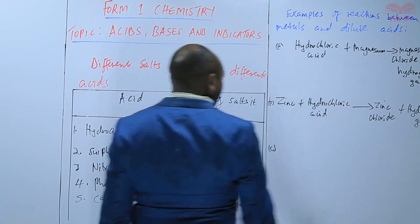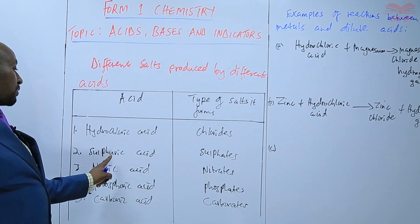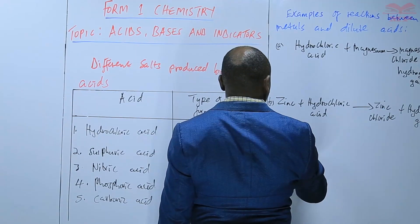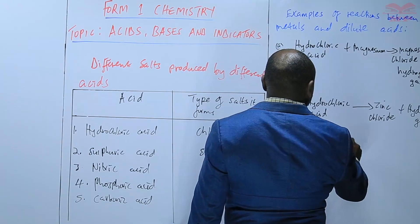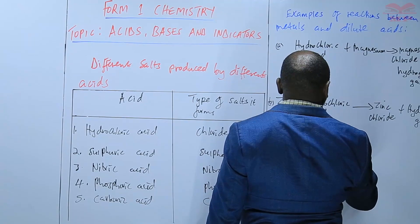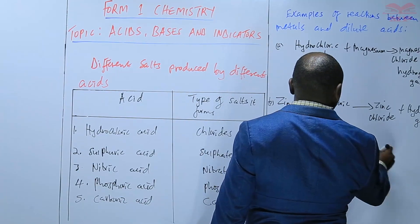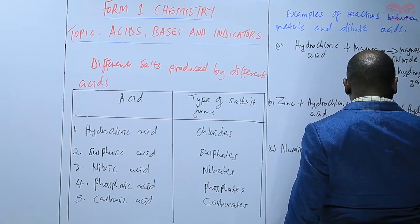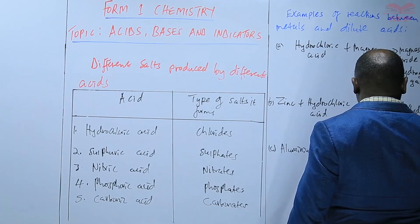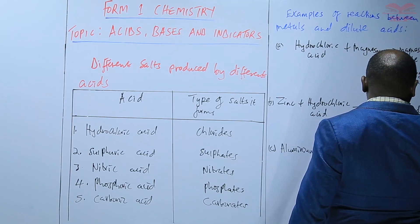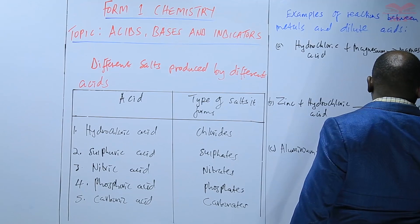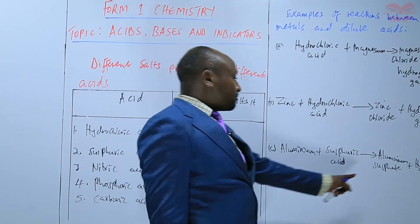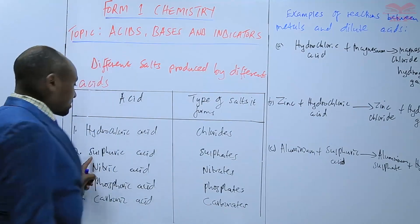Now changing from hydrochloric acid, we use sulfuric acid with aluminium as the metal: aluminium plus sulfuric acid gives us aluminium sulfate plus hydrogen gas. It is a sulfate because we are using sulfuric acid.